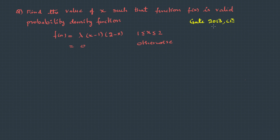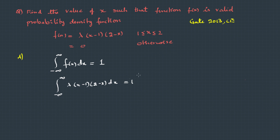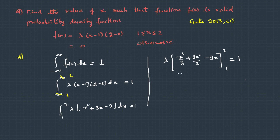Here is a question asked in GATE 2013 CE. Find the value of λ such that the function f(x) is a valid probability density function, where f(x) = λ·(x−1)·(2−x) between the intervals 1 to 2, and it is 0 otherwise. To solve this, we use the rule that integral from negative infinity to infinity of f(x) dx must equal 1. Since f(x) is 0 outside [1,2], we integrate from 1 to 2. Expanding gives λ·(−x² + 3x − 2) dx. Integrating and substituting the limits, we get λ = 6.